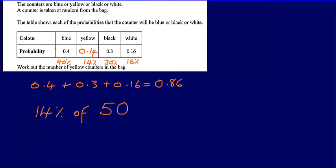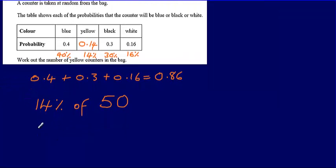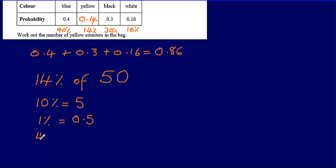So this is a non-calculator paper. Loads of ways that you can do this. The way that I'm going to do it is I'm going to say that 10% will be equal to 5. Then that means that 1% will be equal to 0.5, which in turn means that 4% must be equal to 4 times 0.5, or we can say that that's 2.